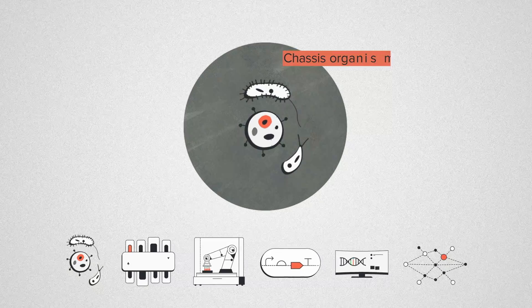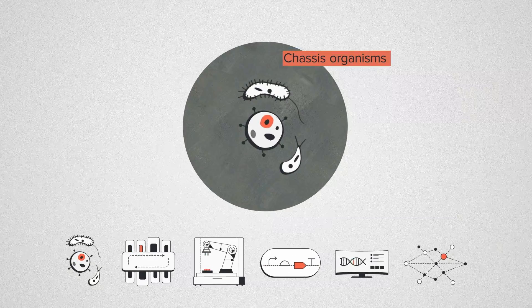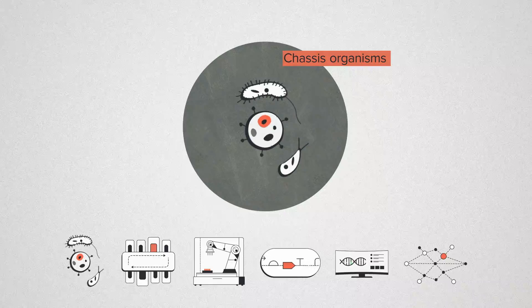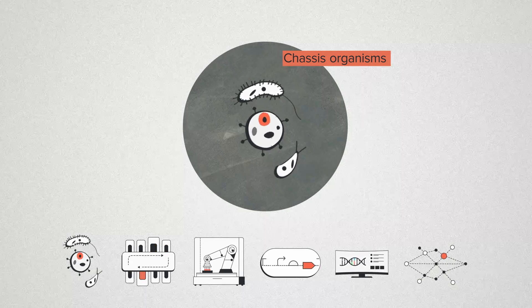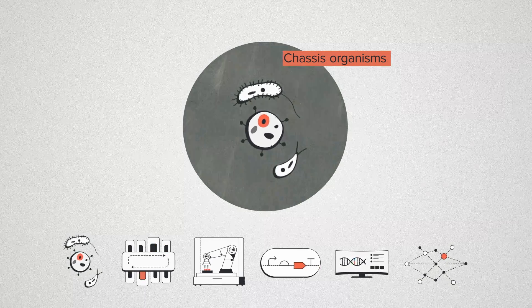Personally, I'd break down the biological codebase into six different categories. Chassis organisms are the strains and cell lines that we work with the most — yeast strains like Pichia or mammalian cells like HEK. We don't limit ourselves to only one cell type, but the more you work with a particular organism, the better you get at all the techniques required to engineer it.